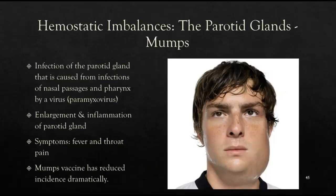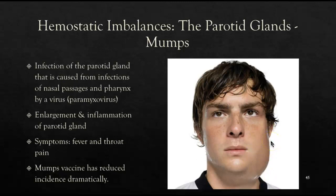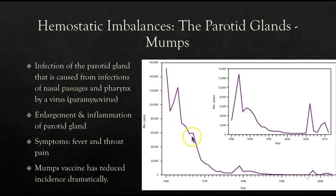Sometimes the salivary glands can get infected — in the case of the parotid gland, this causes mumps. Mumps is caused by the paramyxovirus originating from the nasal passages and pharynx, and causes enlargement and inflammation of the parotid gland, forming a bump in the mandibular and neck region. Symptoms include fever and throat pain. Fortunately, a vaccine exists that has dramatically reduced the incidence of mumps.